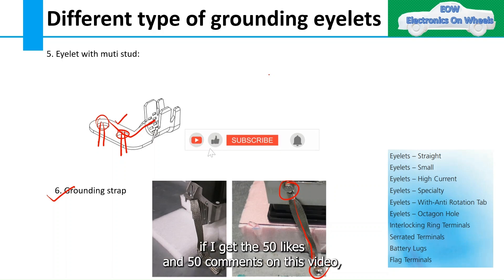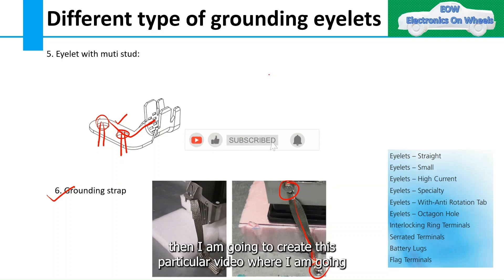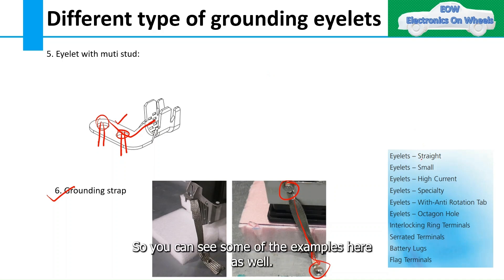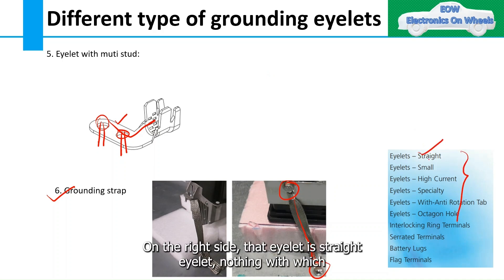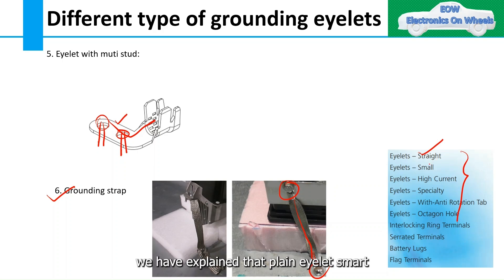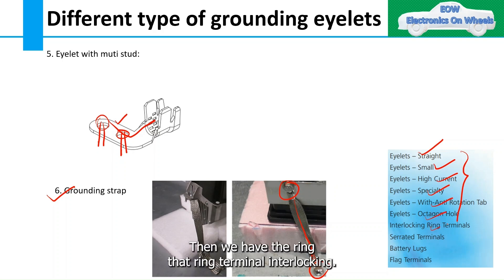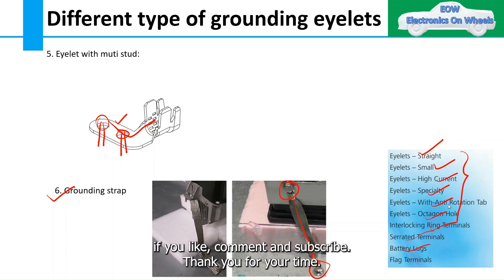I will create that video if I get 50 likes and 50 comments on this video — explaining which particular eyelet is used for what purpose and in which application. You can also see some examples here on the right side: the straight eyelet, the plain eyelet, small high-current specialty with anti-rotation knob, octagon, ring terminal, and interlocking ring terminal. If you like, comment, and subscribe — thank you for your time.